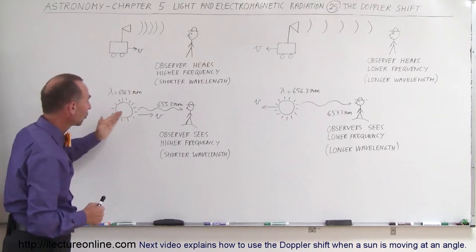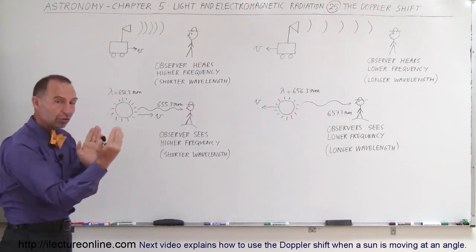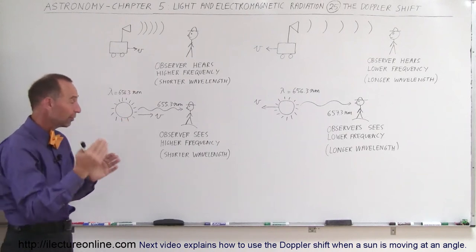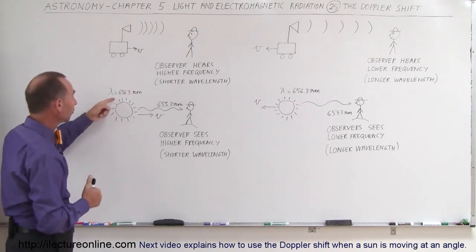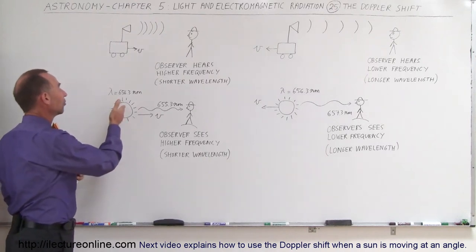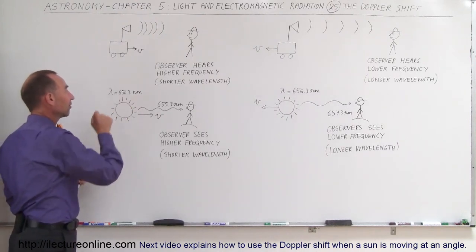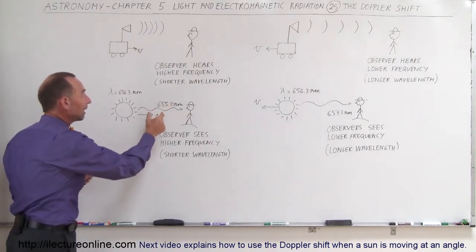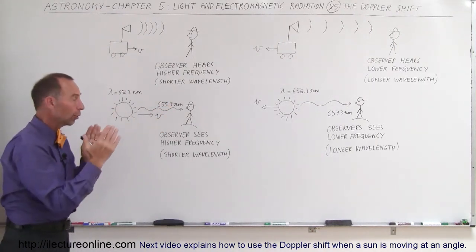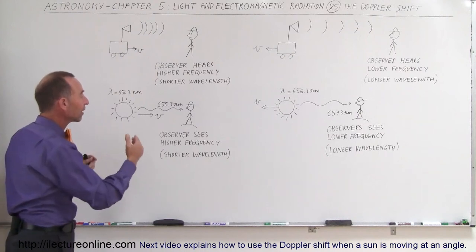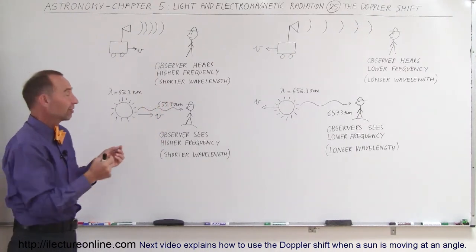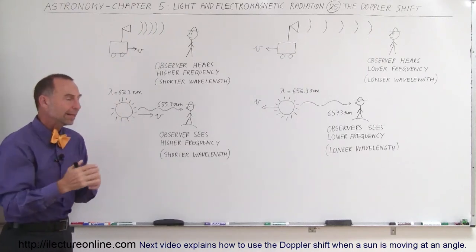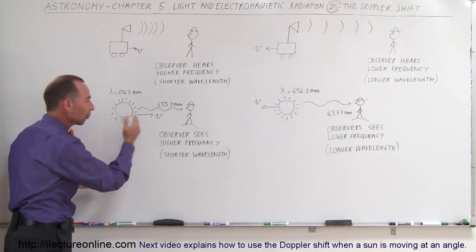But if the object is moving towards us, it will push the wavelengths closer together. Therefore, the observer will see a higher frequency and shorter wavelengths and so light that may have left the star with a wavelength of 656.3 nanometers because of the motion of the star will observe it at a lower or smaller wavelength or a higher frequency at 655.3 nanometers. For example, one nanometer smaller than it was before, which would be an indication that the star is actually moving towards us.